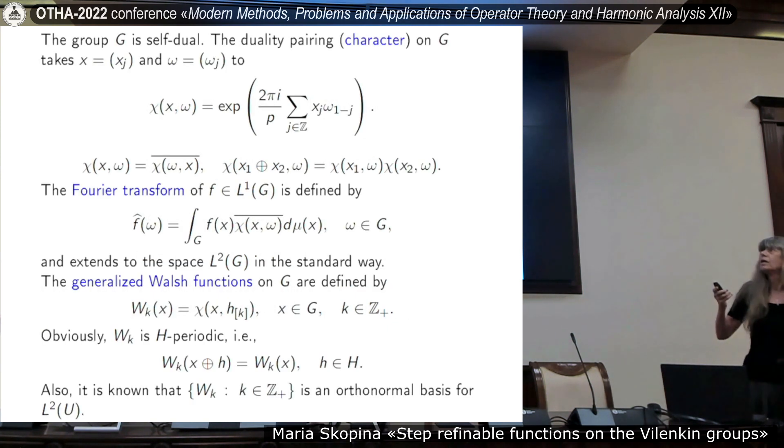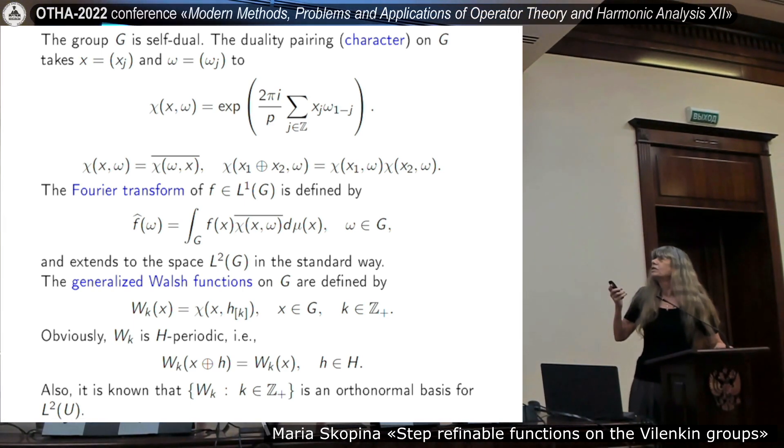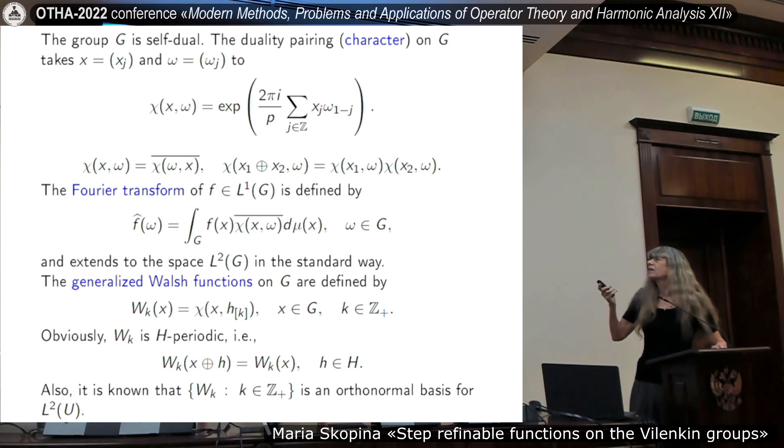Integer element of group corresponds to your positive integer. Group is self-dual. Characters provide this duality pairing. And characters are defined chi of x omega, exponent and you see formula. And simple properties, which explain that these are really characters.